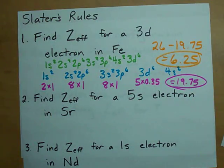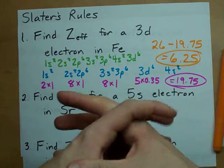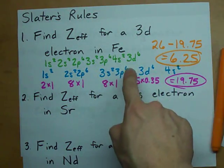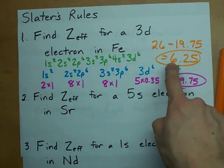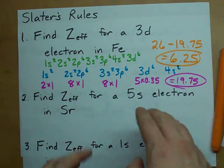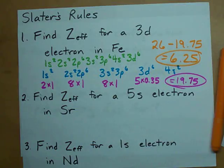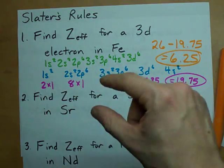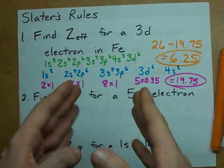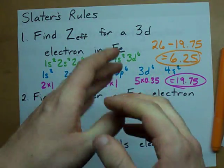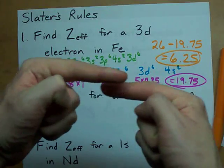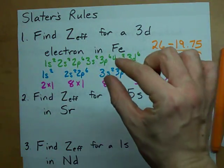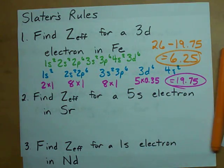So, even though there are 26 protons at the center of an Fe atom, a 3d electron will only actually see 6.25 of them. That's important in terms of how easy is it to remove the 3d electron? Well, if it was seeing 26 positive charges, it wouldn't want to go anywhere because it's really attracted to them. But it's really only seeing 6 positive charges, so it's probably easier than you think to remove a 3d electron.